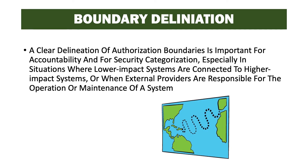A clear delineation of authorization boundaries is important for accountability and security categorization, especially in systems where lower impact systems are connected to higher impact systems, or when external providers are responsible for operation or maintenance. When a low impact system and a high impact system are included in the same boundary, the low impact system will likely get extra controls assigned to it because it's in the same scope as the high impact system. In that case, it may make sense to separate them into two different systems.